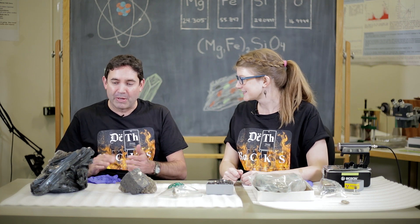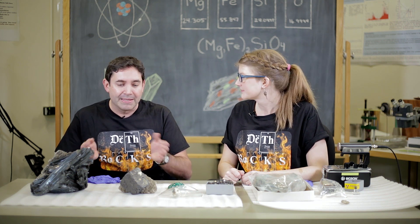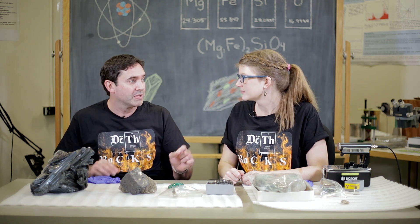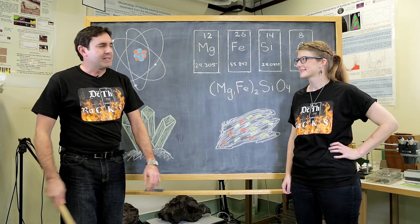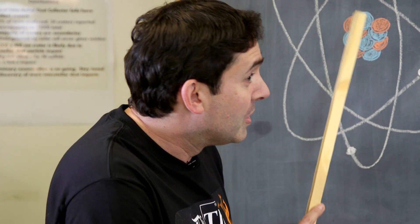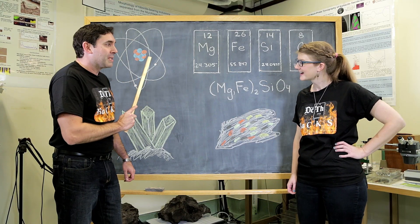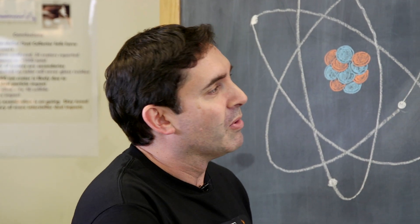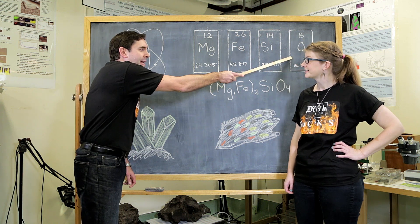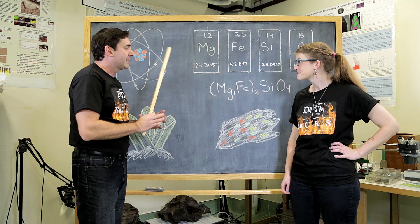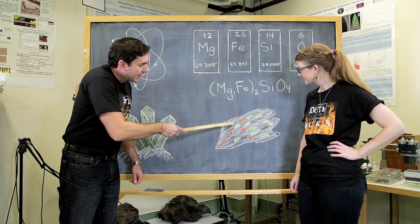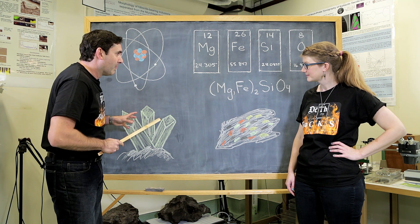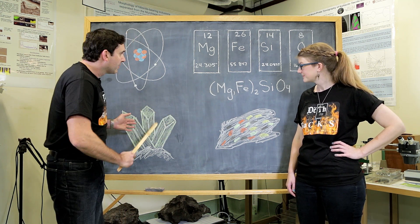Today we're going to learn about some deadly rocks. In front of us, we have a few examples of dangerous minerals. These aren't necessarily deadly, but it depends on your exposure and how you work with these materials. First, I think we need to do a review of the basics. Pop quiz, Emily. What's this? An atom. And in the center of the atom we call it the nucleus, which is made out of protons and neutrons, and around the nucleus are electrons. These atoms are the building blocks of all matter, expressed in the periodic table — we have four examples: magnesium, iron, silicon, and oxygen. These elements come together to form compounds, and these compounds sometimes form minerals. In the case of these four elements, they form the mineral olivine. Rocks are aggregates of different minerals, so you can have olivine inside different types of rocks. Olivine is not a death rock — it's not even dangerous. We use this as an example to show what rocks, minerals, elements, and atoms are made out of.